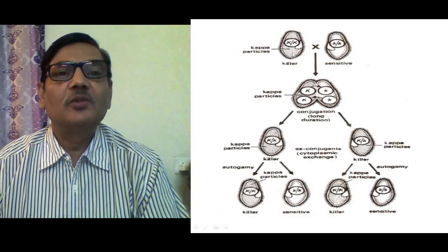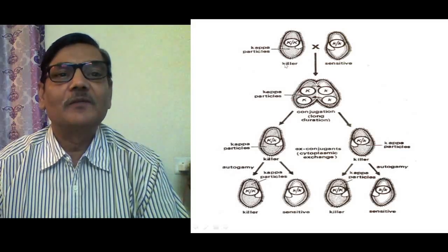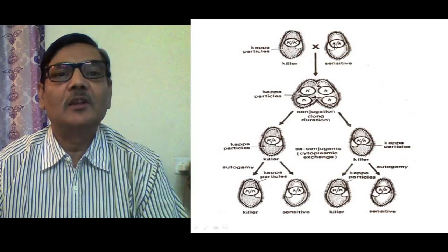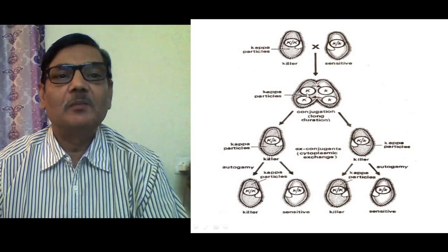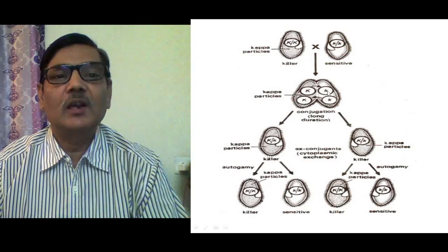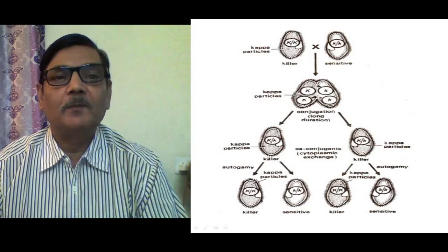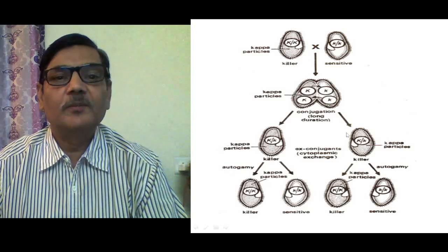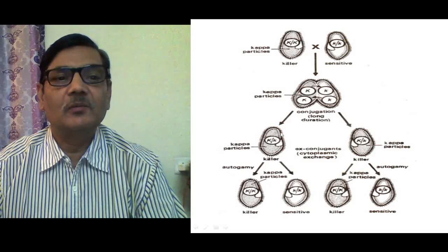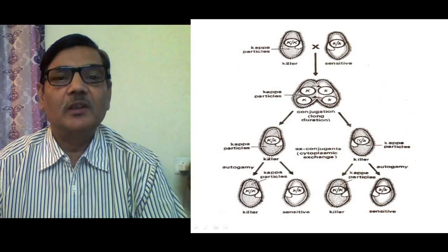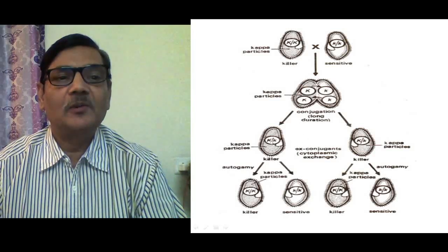In this next diagram, two paramecia are shown again — the left one is killer with genotype capital K capital K, and the right one is sensitive with genotype small k small k. They undergo conjugation this time for longer duration, exchanging both nuclear content and cytoplasmic content. As a result, both ex-conjugants will have genotype capital K small k. Both are killers because both received kappa particles, and such particles will be maintained in their cytoplasm since the favorable genotype capital K is present in them.